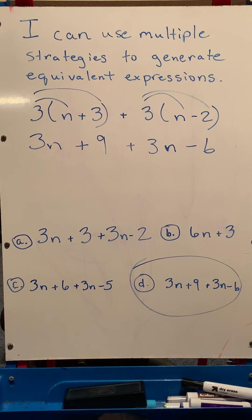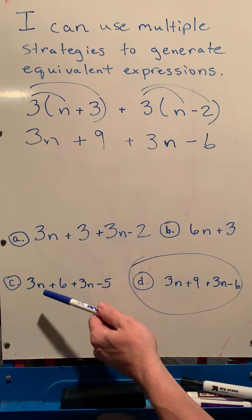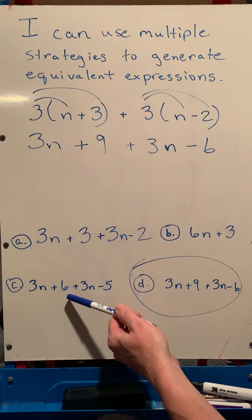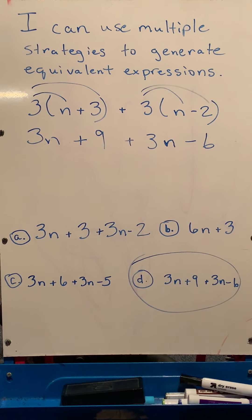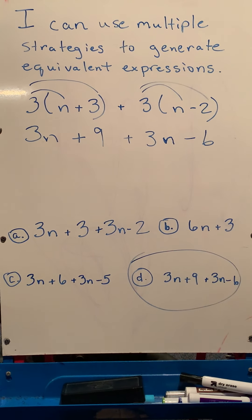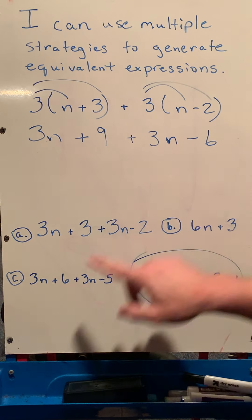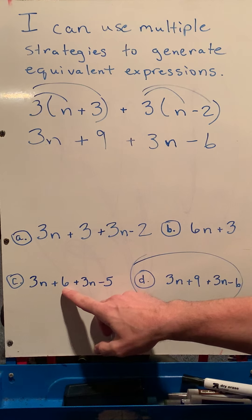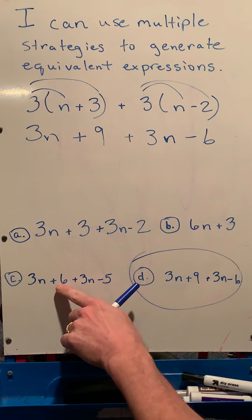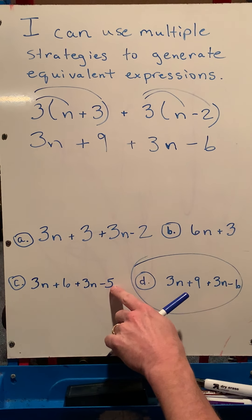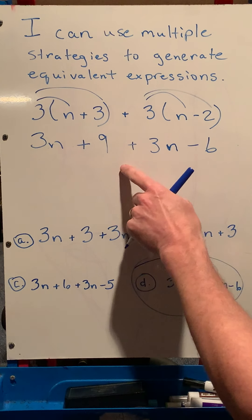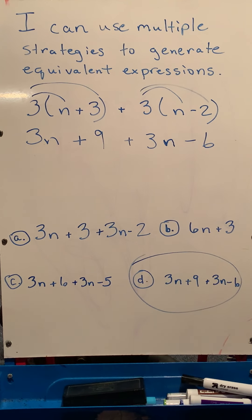If I look at another one here, this one is 3n plus 6 plus 3n minus 5. So in that case, we have 3n and 3n. So we have that the same. But if I look at combining like terms here, a positive 6 minus 5 only gives me 1. And when I do that up here, we're going to find out that doesn't work.